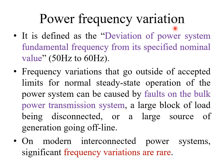Power frequency variation refers to any variation in the system frequency. For example, in a 50 Hz system with a tolerance of ±2 Hz, anything above 52 Hz or below 48 Hz is considered a power frequency variation. If the variation is large, it affects the entire transmission and distribution system with severe consequences. With modern technologies, such frequency variations are very rare. That concludes the discussion on power quality issues. Thank you.